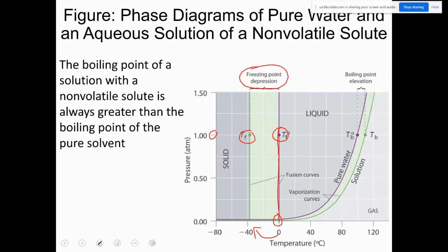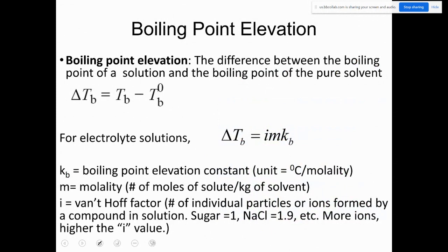For boiling point elevation: the boiling point of water is 100°C at one atmosphere pressure. When solute particles like salt are added to water, the boiling point increases — let's say from 100 to 110°C. This difference is called boiling point elevation. Remember, for your exam I will ask you many questions about understanding these graphs.